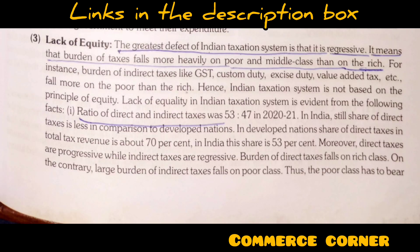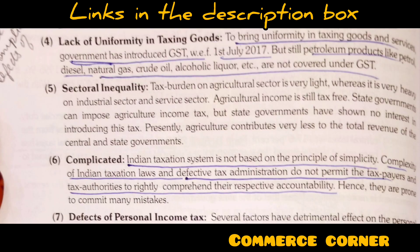The third defect is lack of equity — the burden of taxes falls heavily on the poor or middle class. For example, the burden of indirect taxes like GST and custom duties is proportionally greater on the poor compared to the rich. GST mainly burdens the poor more than the rich. Next is lack of uniformity in taxing goods — the government introduced GST on 1st July 2017, but petroleum products like diesel, natural gas, crude oil, and alcoholic liquor are not covered under GST, so uniformity is lacking.